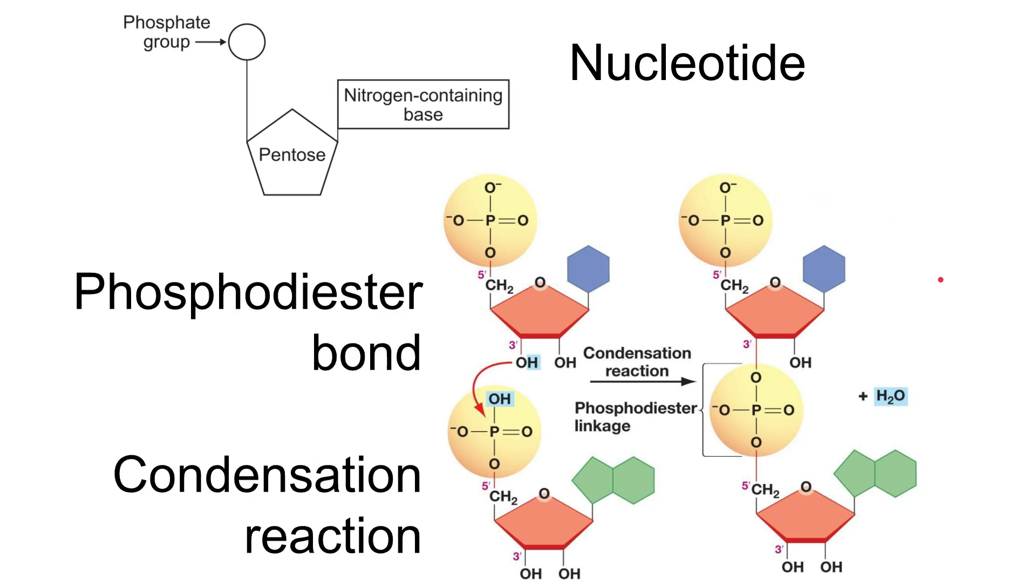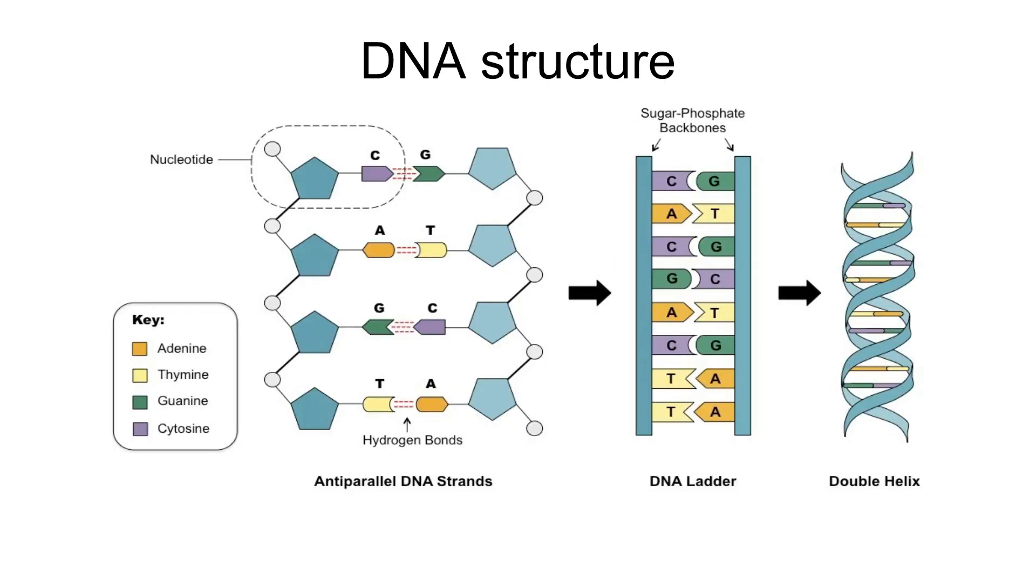To reiterate, we have a condensation reaction producing a phosphodiester bond. Let's look at a little bit more detail at the structure of DNA. You can see here I have a polynucleotide of DNA now, so I've got DNA nucleotides bonded together.